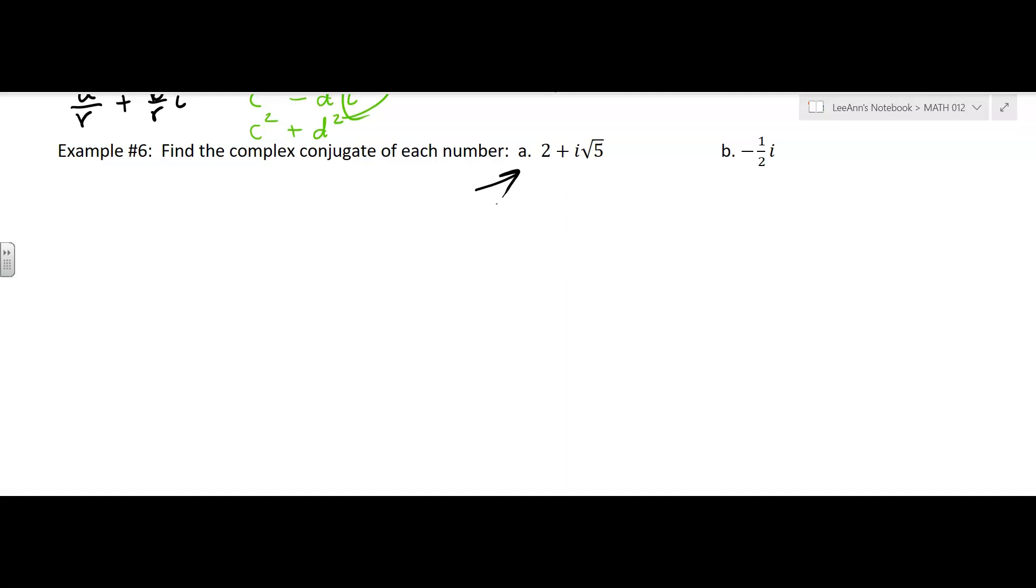It says 2 plus i square root 5. The conjugate is going to be 2 minus i square root 5. Now, they put the i in front of the radical, but we talked about that. That's okay. All right.